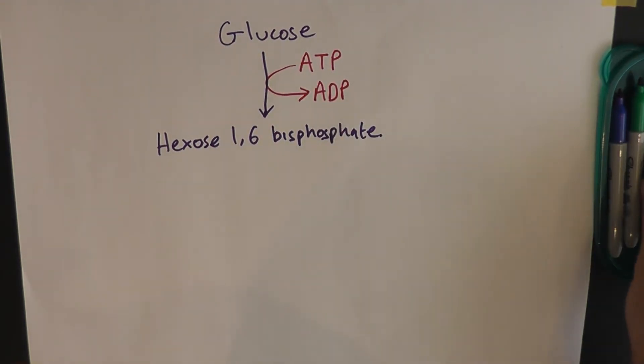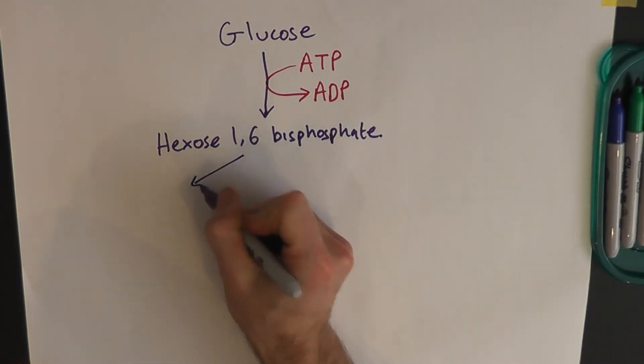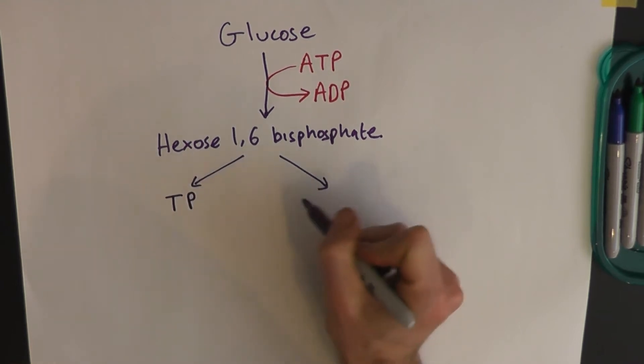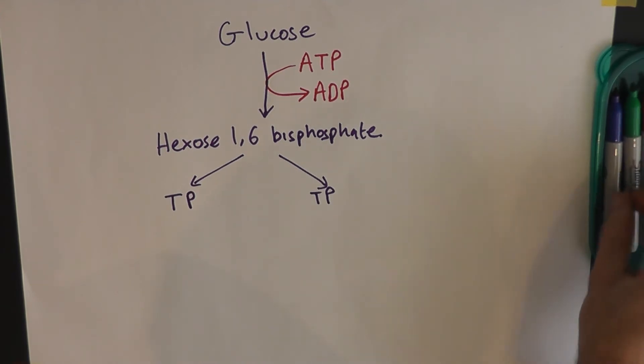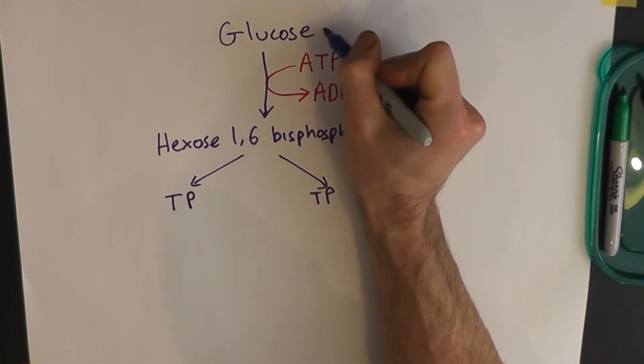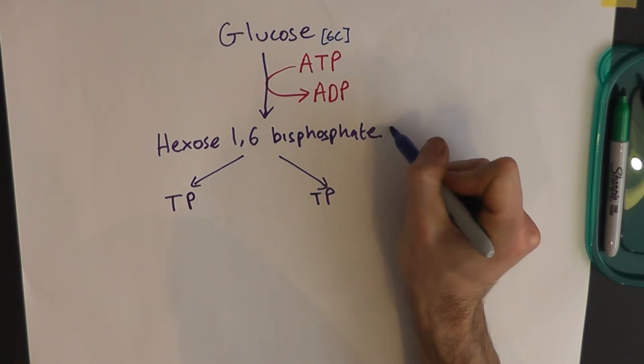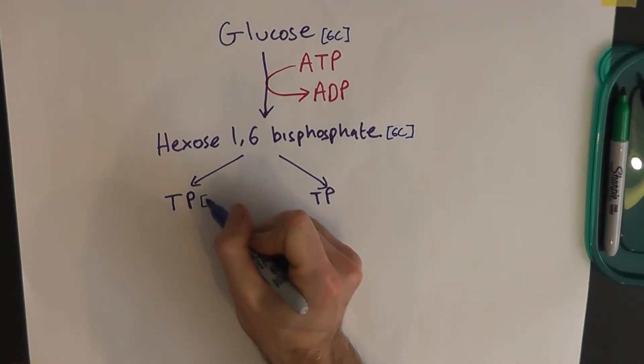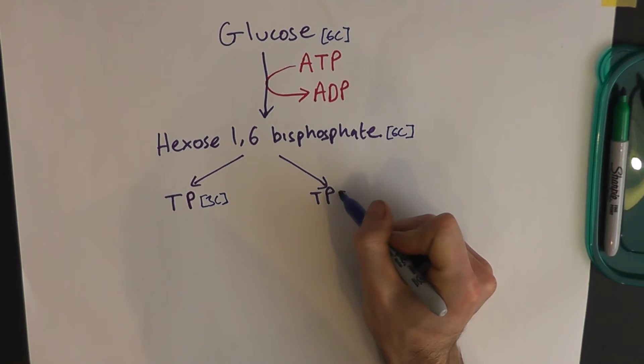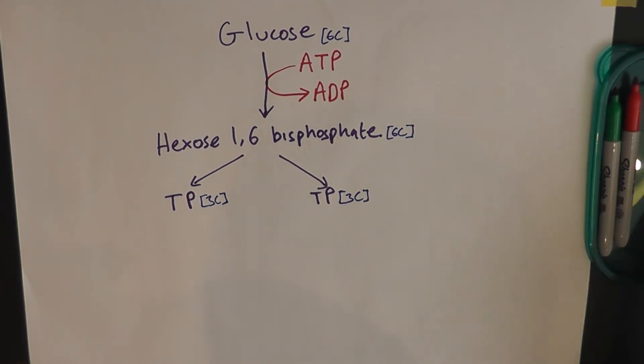And that is the first phase of glycolysis. And that molecule splits into two molecules of triosephosphate. So everything that happens after this happens twice. We'll just have a look at the numbers of carbons involved here. Glucose, as some of you will probably know, is a six-carbon molecule. Hexose 1,6-bisphosphate, well that's still six carbons, it's a hexose sugar. But triosephosphate, that's a three-carbon molecule.